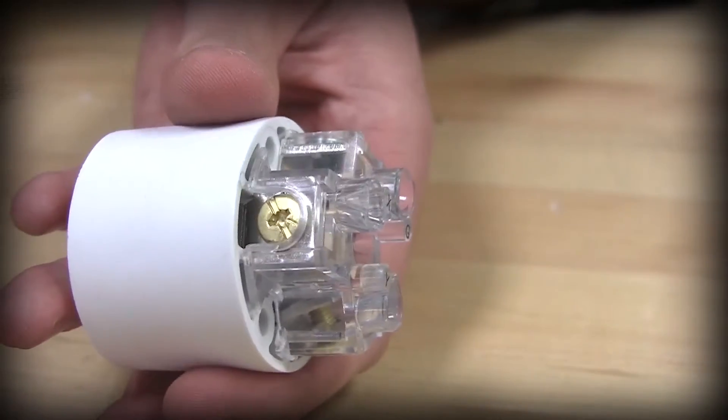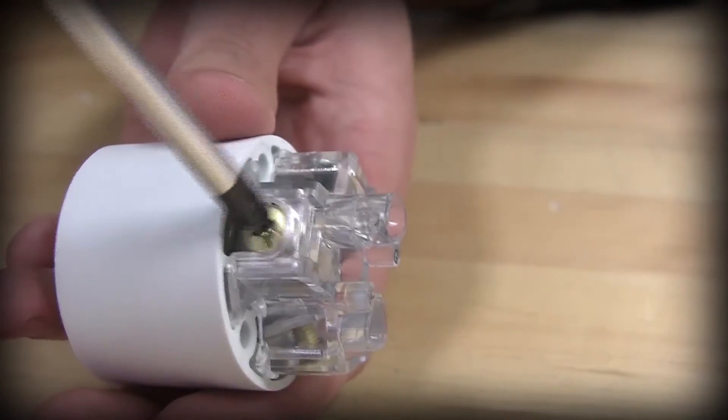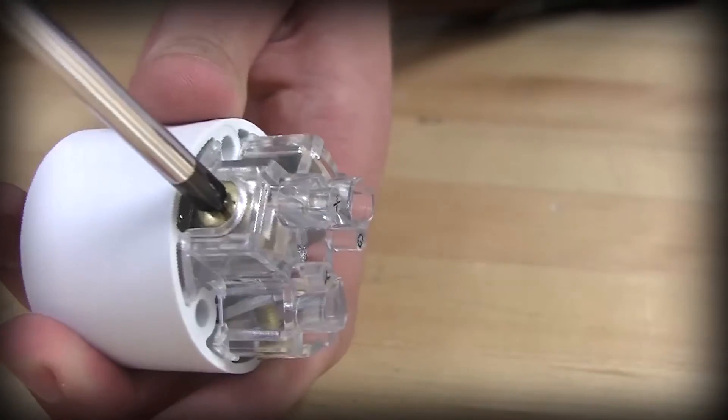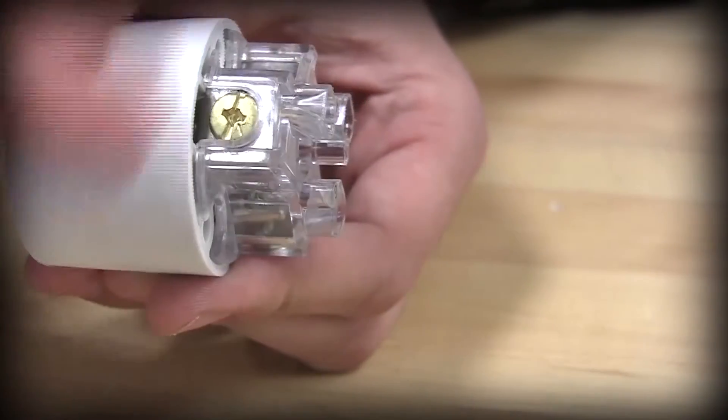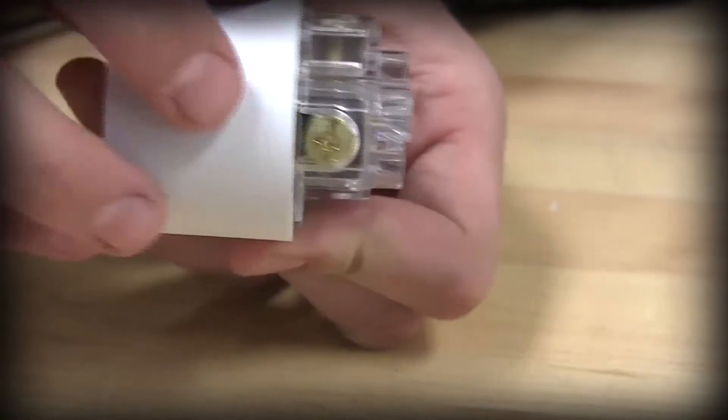Ensure that all terminal screws are backed out to their fullest position so that the terminal wire clamp is clear of the wire entrance hole, allowing the conductor leads to pass through unobstructed. Be sure not to use excessive force.